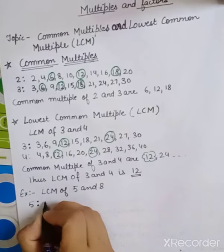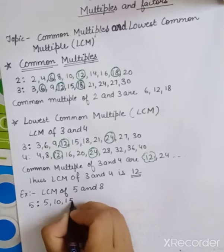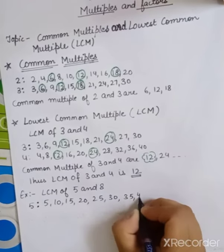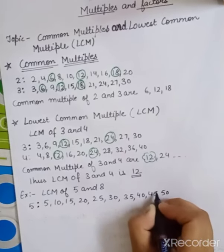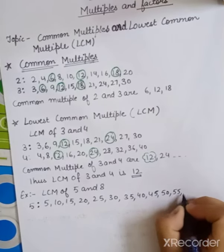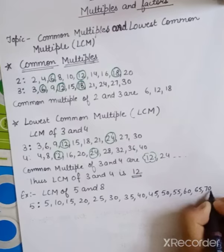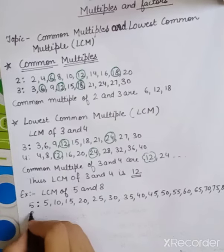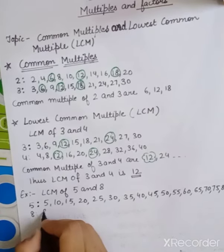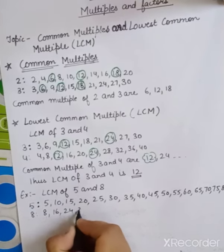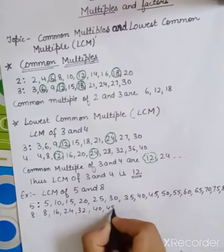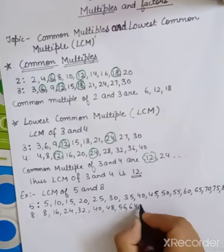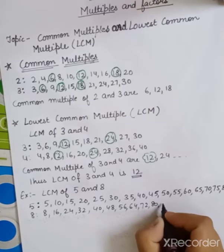The multiples of 5 are: 5, 10, 15, 20, 25, 30, 35, 40, 45, 50, 55, 60, 65, 70, 75, 80, and so on. The multiples of 8 are: 8, 16, 24, 32, 40, 48, 56, 64, 72, 80, 88, and so on.